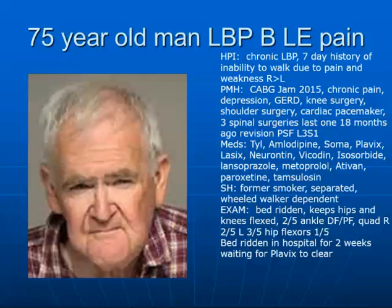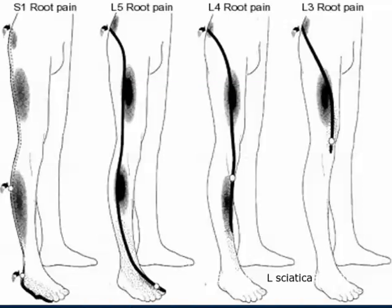He has a history of a CABG in January — seven months ago — and he was on aspirin and Plavix for that. He also has a cardiac pacemaker and three spinal surgeries in the last five or six years, the last one 18 months ago. On exam, he's bedridden — he cannot move, he's been in bed for seven days — and he has severe sciatica pain down his posterior buttocks and legs, with significant weakness. His quadriceps are two out of five motor strength, so without quadriceps you can't walk. Hip flexors are one out of five motor.